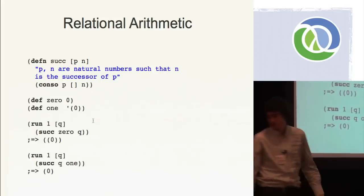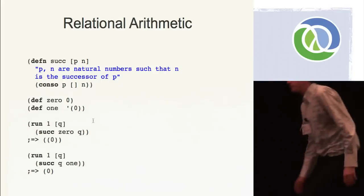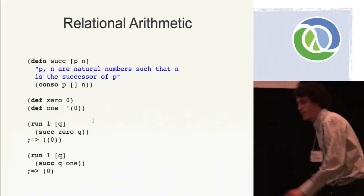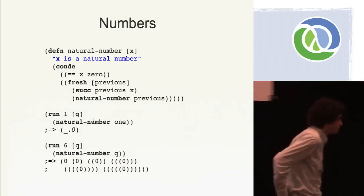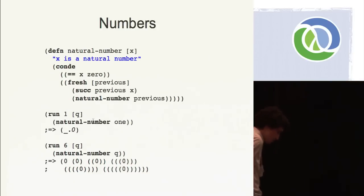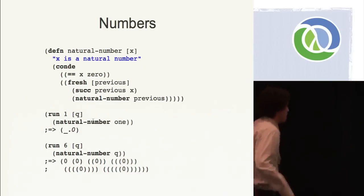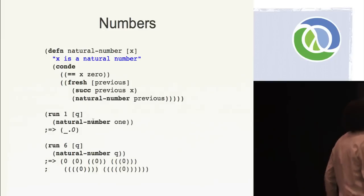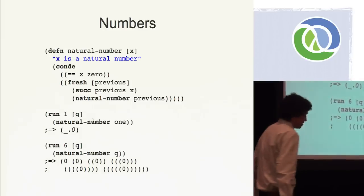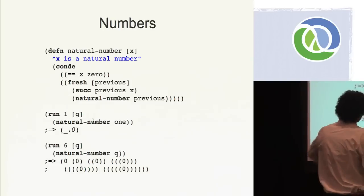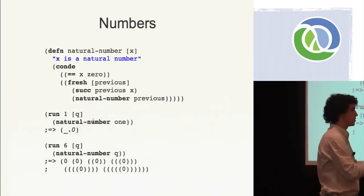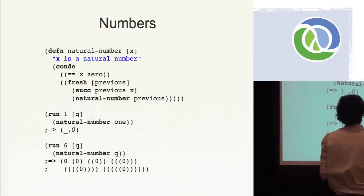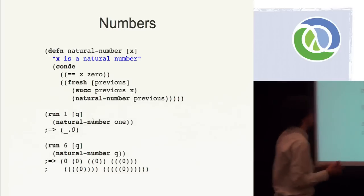We can use this backwards, which is pretty cool. We can say: give me one value of Q such that the successor of Q is one — and of course, that's when Q is zero. We can use this successor function to represent all the natural numbers — all numbers from zero and positive. Our doc string says X is a natural number: if the goal succeeds, X is guaranteed to be a natural number.